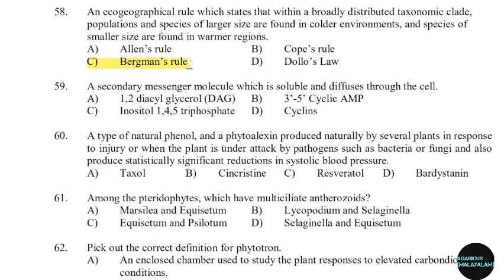59th question: A secondary messenger molecule which is soluble and diffuses through the cell. Correct answer: Option C — Inositol-1,4,5-triphosphate.